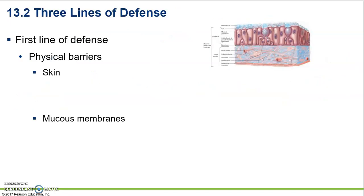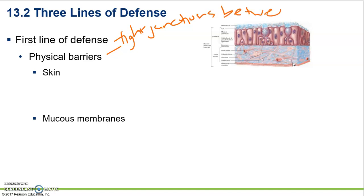Looking at more specifics of the first line of defense: we've got stratified layers of cells — epithelium with tight junctions, making a strong physical barrier. And then there are secretions. Our skin is pretty interesting: you'll have some lysozymes that help break things down, and it's also slightly acidic, which helps reduce the ability of bacteria and fungus to grow on our skin.